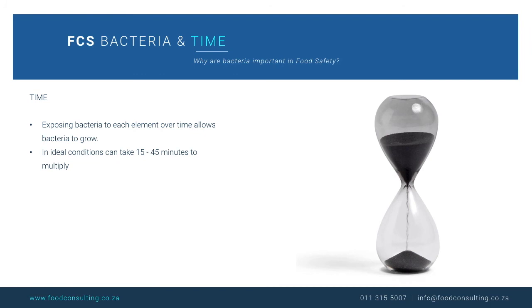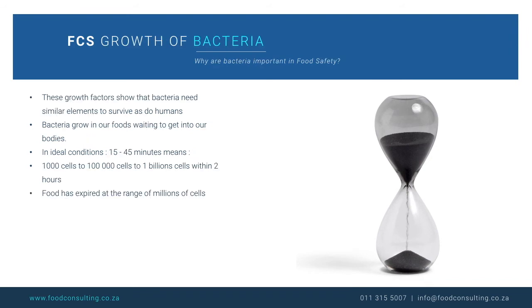The longer bacteria are exposed to ideal conditions, the more established the bacterial cells become. Under ideal conditions, bacteria can rapidly multiply within 15 to 45 minutes, meaning 1,000 bacterial cells can multiply into 100,000 cells within 45 minutes, and up to 1 billion cells within 2 hours. Food starts to expire when reaching a range of millions of bacteria.